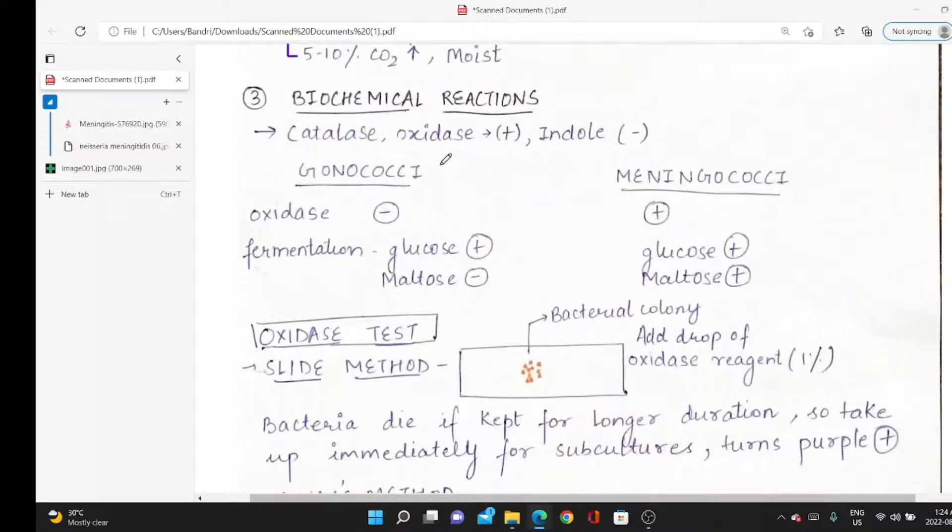In biochemical reactions: catalase, oxidase positive; indole negative. There are two strains: gonorrhoeae, which causes the second most common STD, and meningitidis, which causes meningitis and septicemia. Usually it's a mixed culture, so how do we differentiate them?